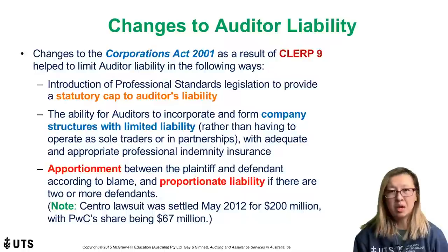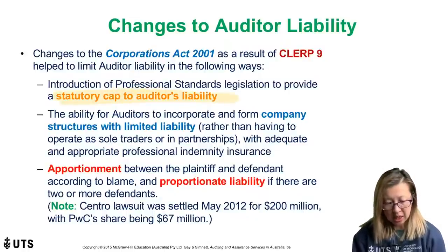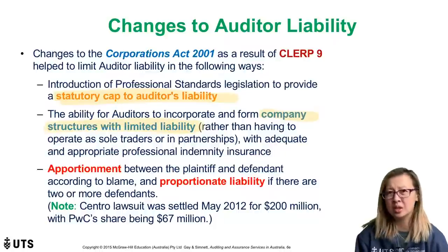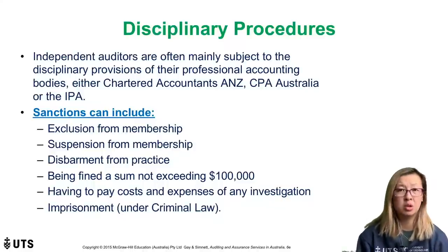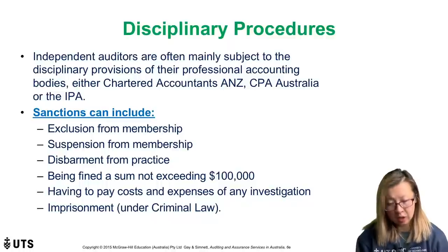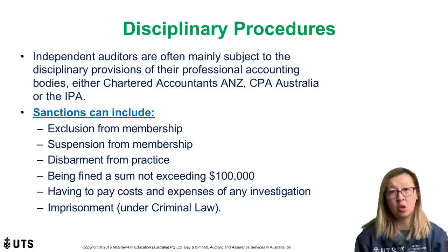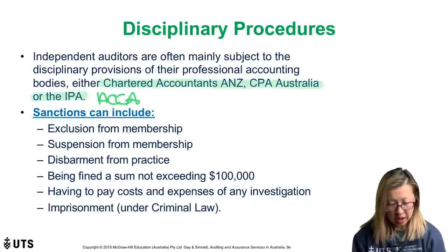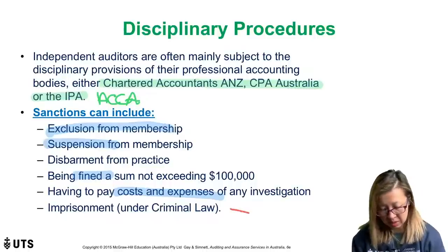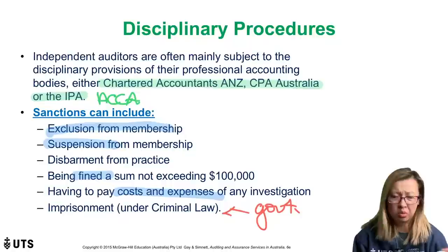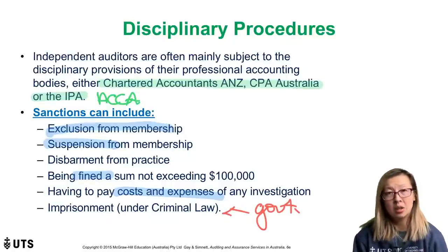There is a cap on legal liability. Most firms are not actual partnerships, so there's not joint and several liability — they have proportional liability amongst the partners if there is contributory negligence in play. If you do do the wrong thing, ASIC through the company auditors and Liquidators Disciplinary Board will take action. The professional bodies can exclude you from membership, suspend you for a period of time, fine you, or require you to pay legal costs. Imprisonment is possible but that comes from the government — CA and CPA can't put auditors in jail, but if you breach the Crimes Act the government will attempt to do so.